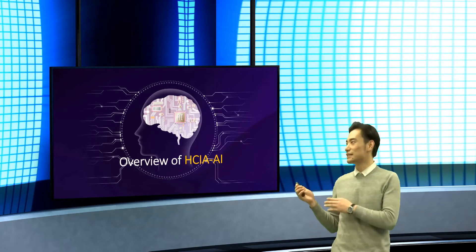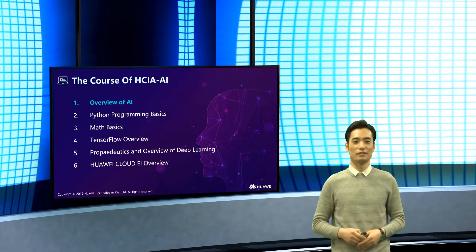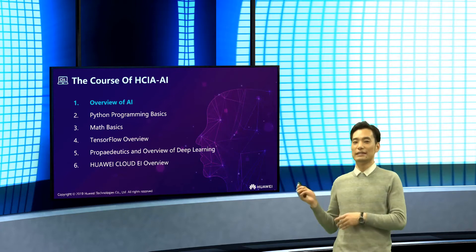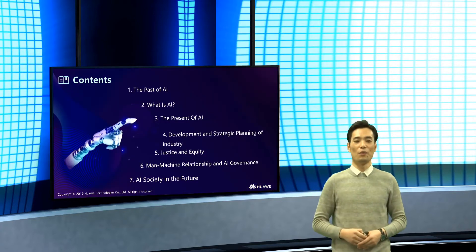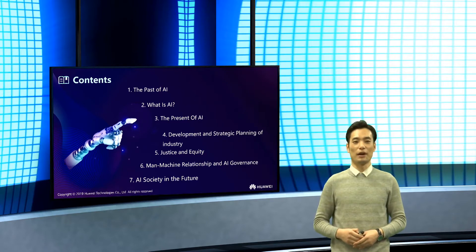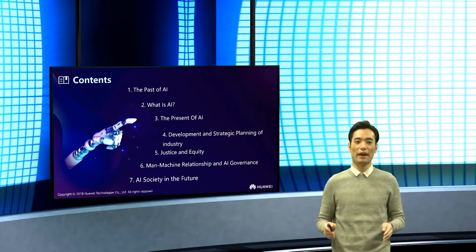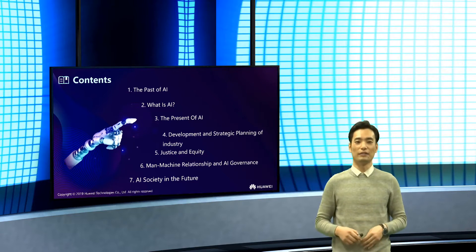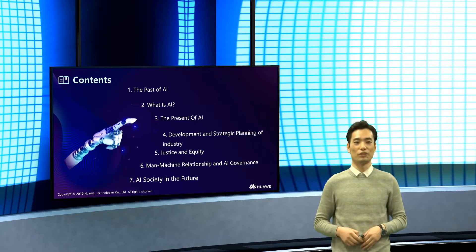We will learn from these six chapters. The first chapter is the overview of AI. In this chapter, we will learn about the development of AI, the problems AI brings to us, how to deal with human-machine relationships, AI governance, and what AI society will be like in the future.